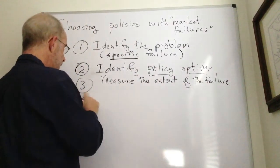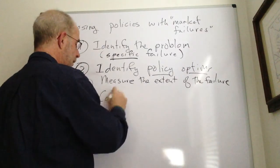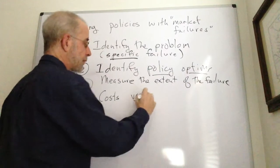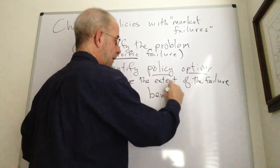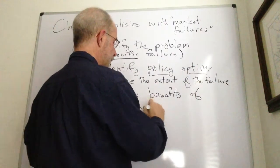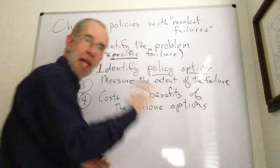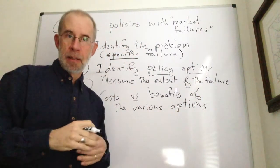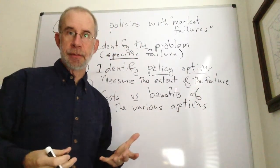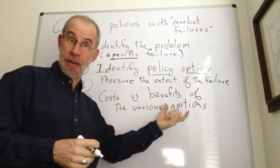And then you want to take a look at the costs versus the benefits of the various options. So in the case with the cars causing pollution, banning old cars seems like kind of a high cost. You get the benefits,